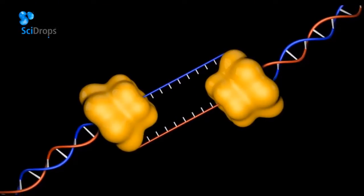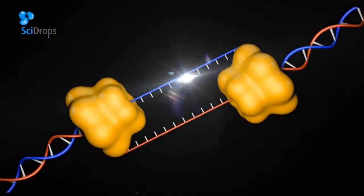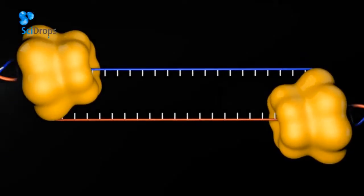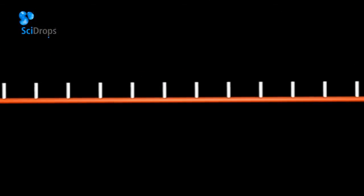DNA replication starts with the opening of the double helix by DNA helicases. This generates two single-stranded DNA molecules, which are then used as templates for the generation of the complementary strand.